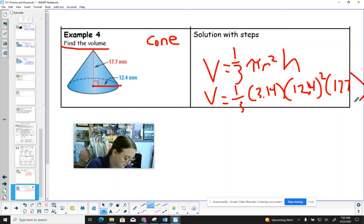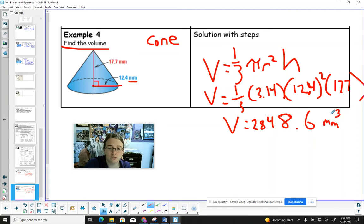Okay, you should get a volume of 2,848.55, so we'll round that to 60. And again, we're talking volume here, so this is millimeters cubed.